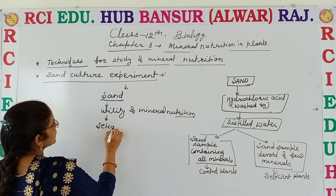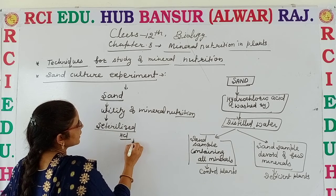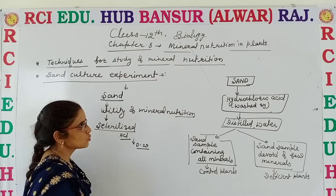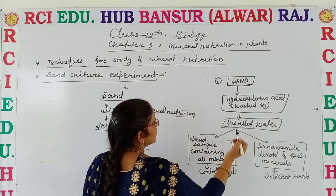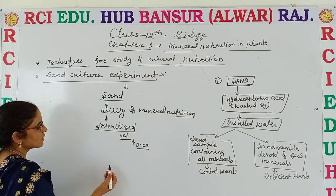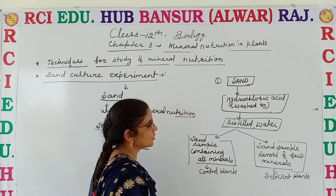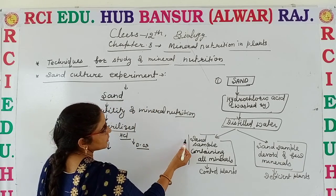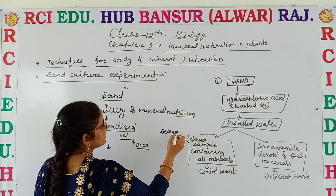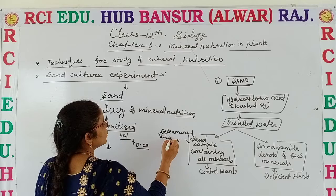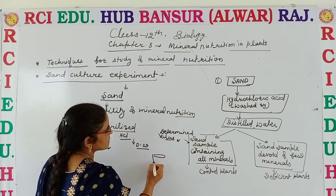First the sand gets sterilized by washing it in hydrochloric acid and then washing it in distilled water. So we take a sand sample, wash it through hydrochloric acid and then through distilled water. Now we grow plants. We divide the sand sample into two parts. One sand sample contains all minerals — the determined value of each and every nutrient — and we add the same sample of nutrients to the sand and grow some plants.